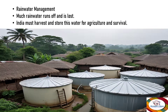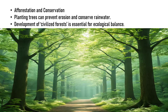Regarding rainwater management, much rainwater runs off and is lost. C.B. Raman suggests that India must harvest and store this water for agriculture and survival. We can make tanks and other storage facilities to store water so that it can be used during the summer season or when there is not enough rain.